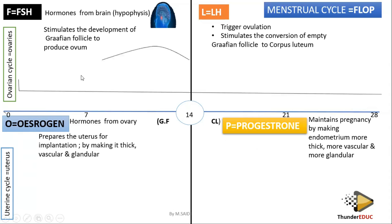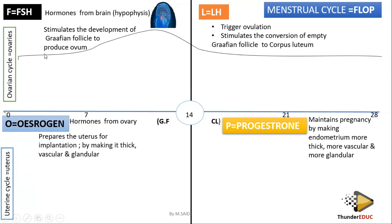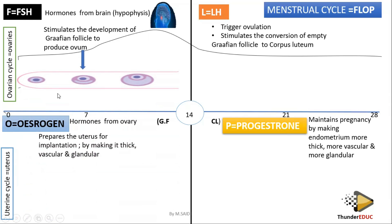Now how do these hormones work? The first hormone to talk about is follicle-stimulating hormone. When follicle-stimulating hormone increases, it increases so that it stimulates the graafian follicle to produce the ovum. The moment it starts to increase, the graafian follicle starts to develop. Before it increased, the graafian follicle was almost the same — but now it starts to increase because follicle-stimulating hormone has increased.